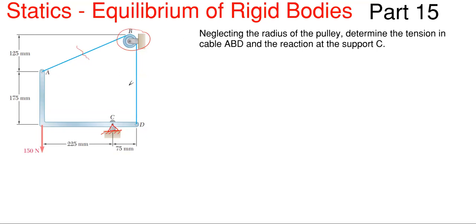We are going to slice through this entire picture through this cable and through this cable here. Because we are saying that neglecting the radius of this pulley, we are assuming that this is a smooth pulley, so whatever tension is on this side of the pulley — tension T — will be the same over here as well. So if we cut this tension in this cable right here, this will be T. That means the tension all the way through the cable is the same, even on this side at point D.